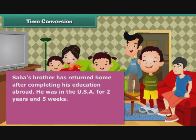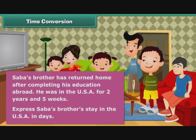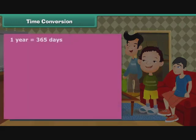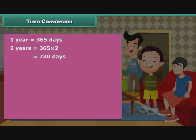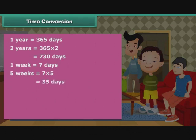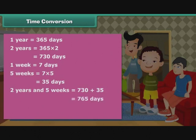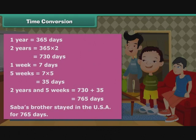Sabah's brother has returned home after completing his education abroad. He was in the USA for 2 years and 5 weeks. Express his stay in days. 1 year is equal to 365 days, so 2 years is equal to 730 days. 1 week is equal to 7 days, so 5 weeks is equal to 35 days. 2 years and 5 weeks is equal to 730 plus 35, which equals 765 days. Sabah's brother stayed in the USA for 765 days.